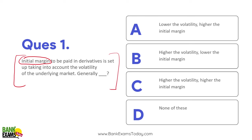When you take a trade in the market, the broker will collect some initial margin. For example, if you want to trade in Nifty, you must pay the initial margin. Generally, higher the volatility, higher the initial margin — जितनी volatility ज्यादा है, उतना initial margin ज्यादा देना पड़ेगा।